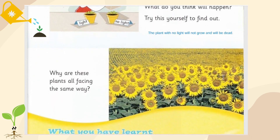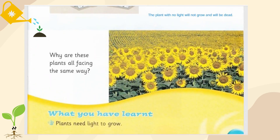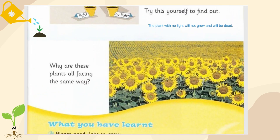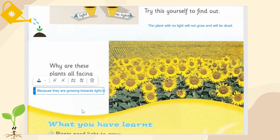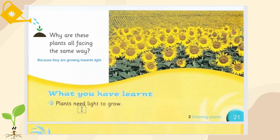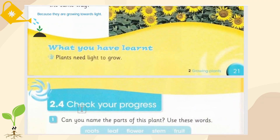You can see many sunflowers all facing the same way. Why? Because they are growing towards the light. Plants need light to grow.